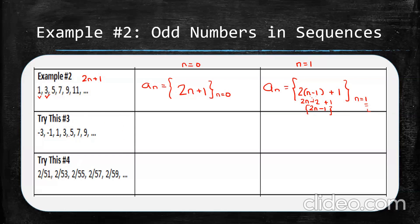For 'try this 3,' it's again all the odd numbers, but starting at negative 3 instead of 1 — so you'll need to adjust the formula to start at negative 3. For 'try this 4,' these are all odd numbers starting at 51, so the denominator will be some variation of 2n plus 1 plus an additional constant.